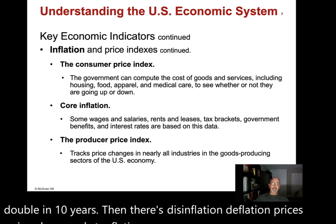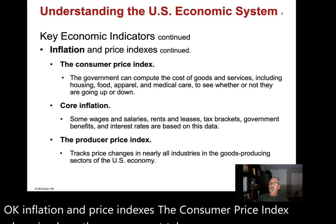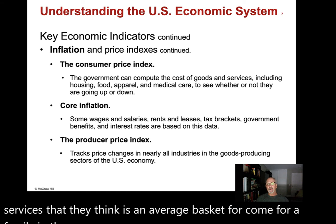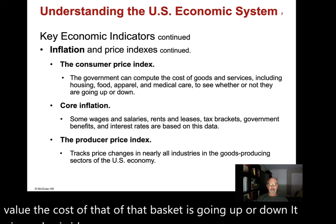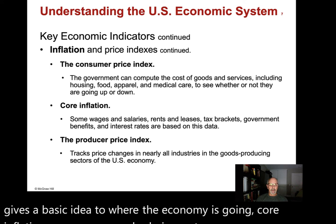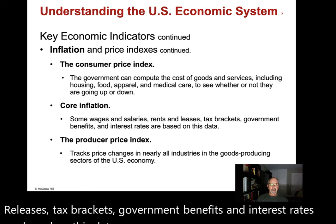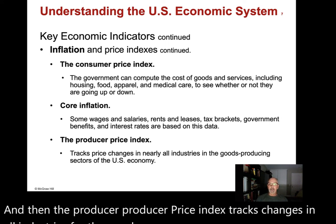The consumer price index is where the government takes a basket of goods and services representing an average family in the United States and tracks whether the cost of that basket is going up or down. It gives a basic idea of where the economy is going. Core inflation affects wages, salaries, rents, leases, tax brackets, government benefits, and interest rates. The producer price index tracks changes in all industries for the goods that manufacturers use to create products.